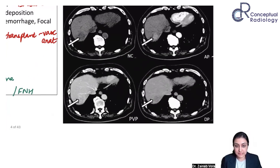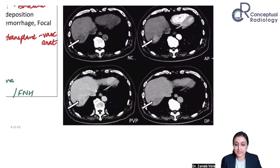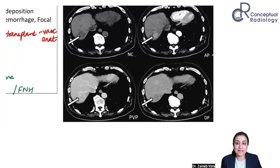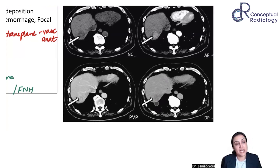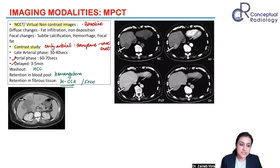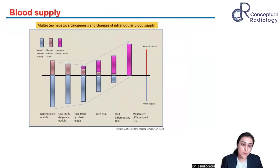In this HCC case: non-contrast hypodense, early arterial enhancement, and then washout in the delayed phase. An important clarification for juniors: washout is NOT compared to the arterial phase — it's compared to the liver parenchyma. The mass becomes hypodense compared to background liver parenchyma. That is washout. This is a typical scan of HCC. We will study this in detail — this was just to give you an idea.